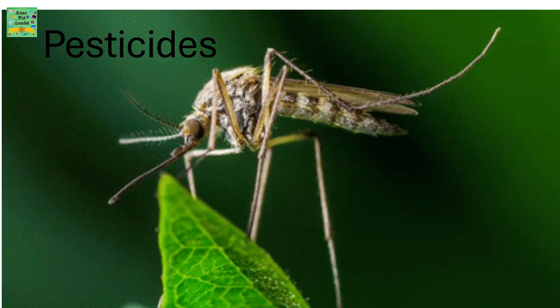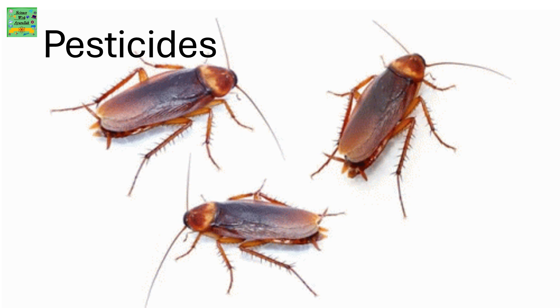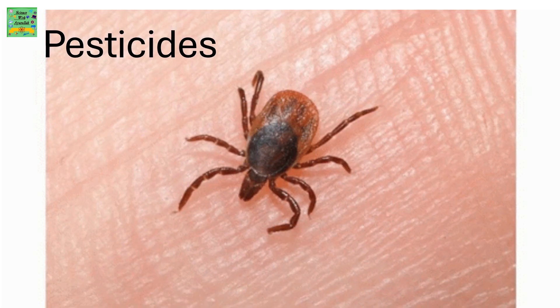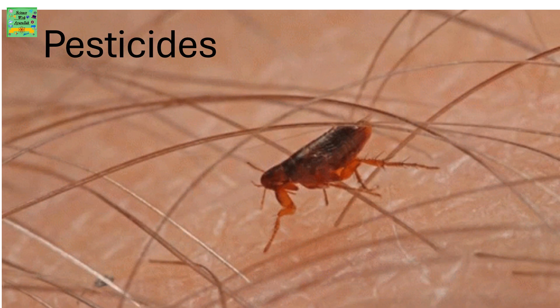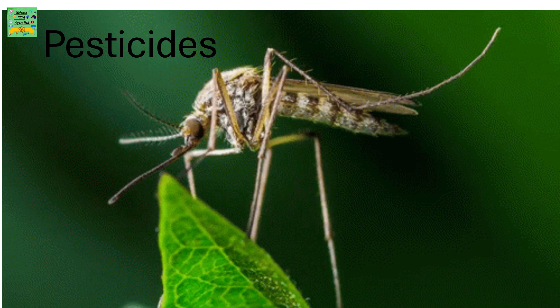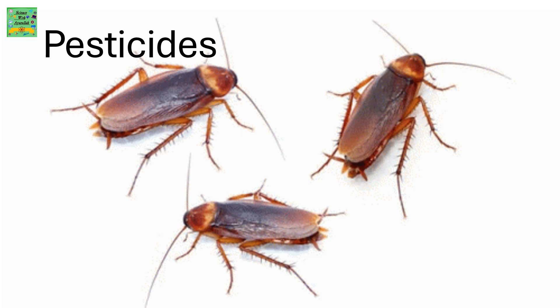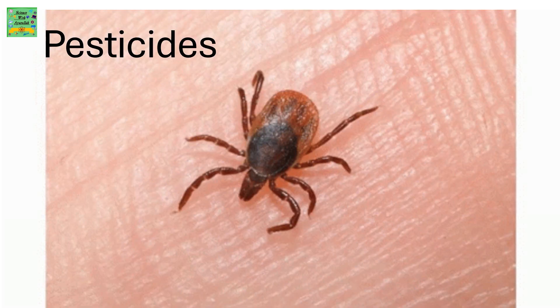Pesticides. Pesticides are used to get rid of insects, which are called pests, from the plant, because they hinder the growth of the plant.